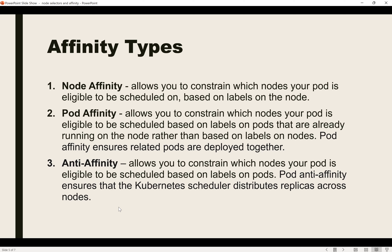In the case of node affinity, the label of the node is checked. For pod affinity, the label of the pod is checked. So if a particular application is already deployed — like a web application with a specific label — then using pod affinity we can ensure another application is deployed on the same node where the first pod is running.